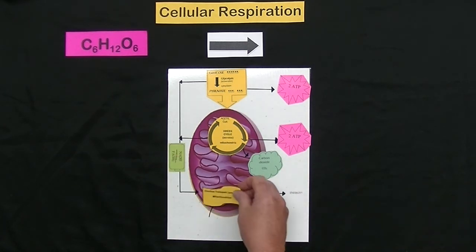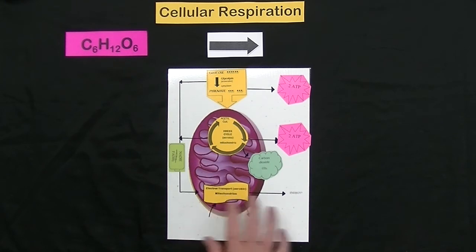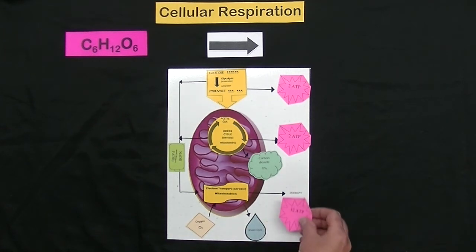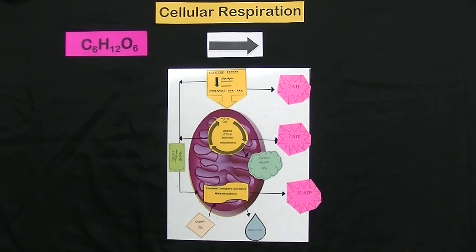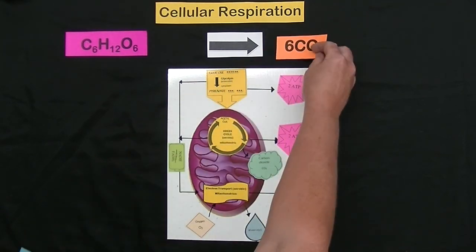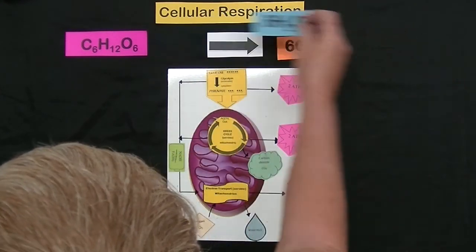Now we are at the last stage of respiration called the electron transport chain. This is where the majority of the energy is produced in respiration. Oxygen enters at the very end of the electron transport chain and combines with the leftover hydrogens to form water and then produces 32 net ATP molecules.